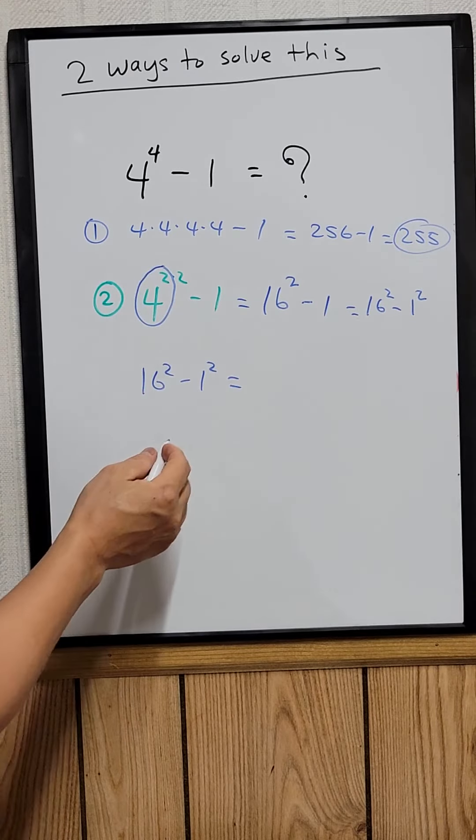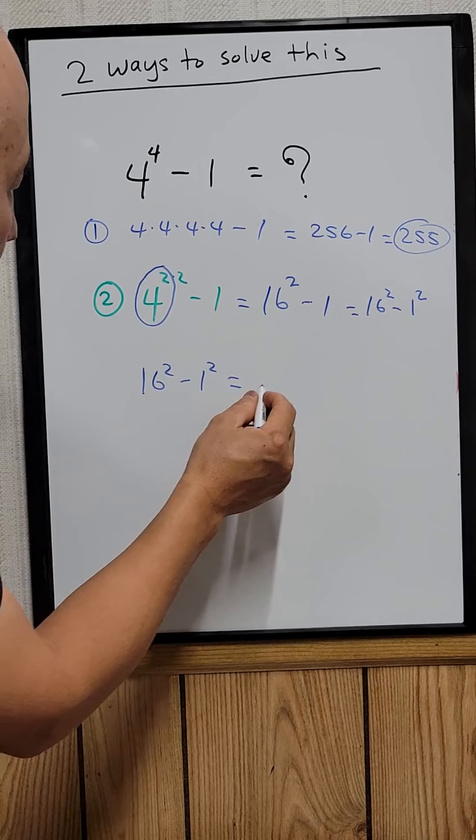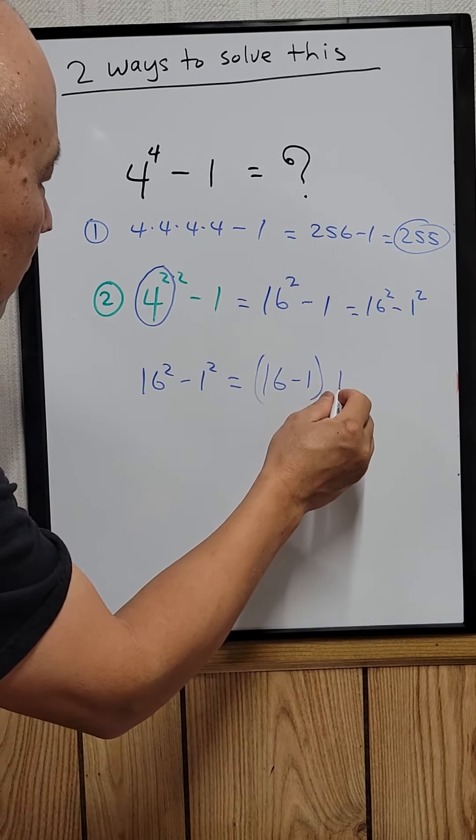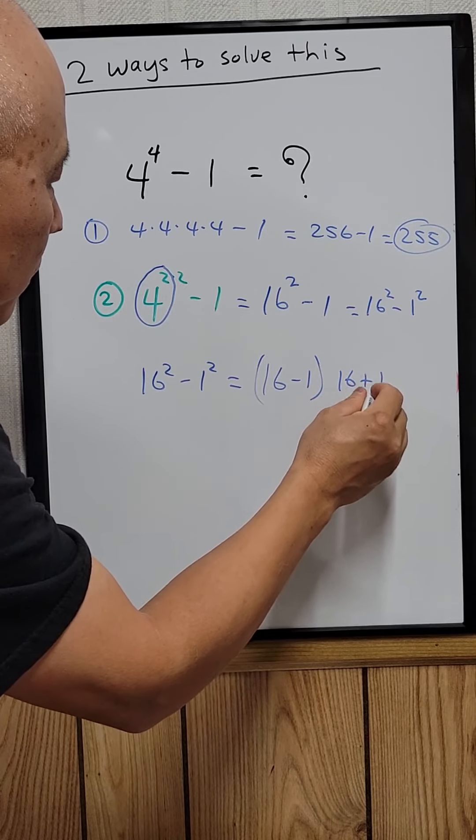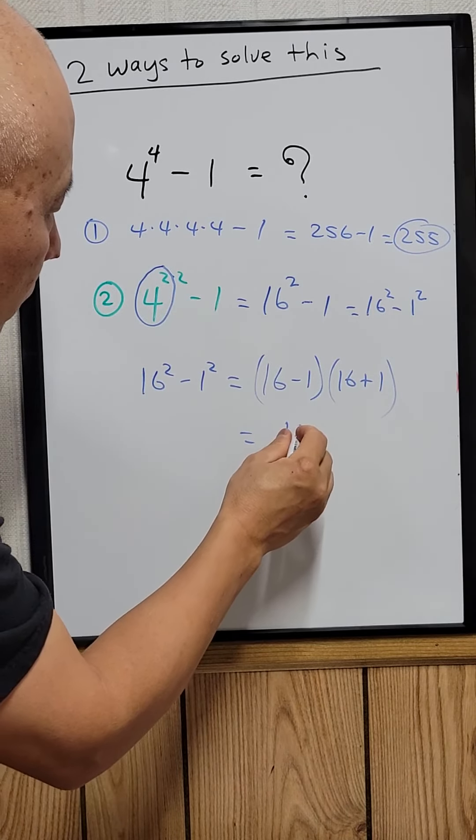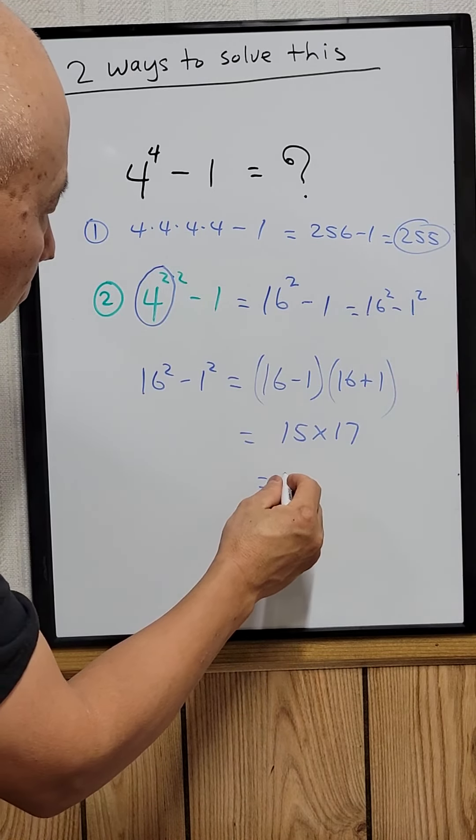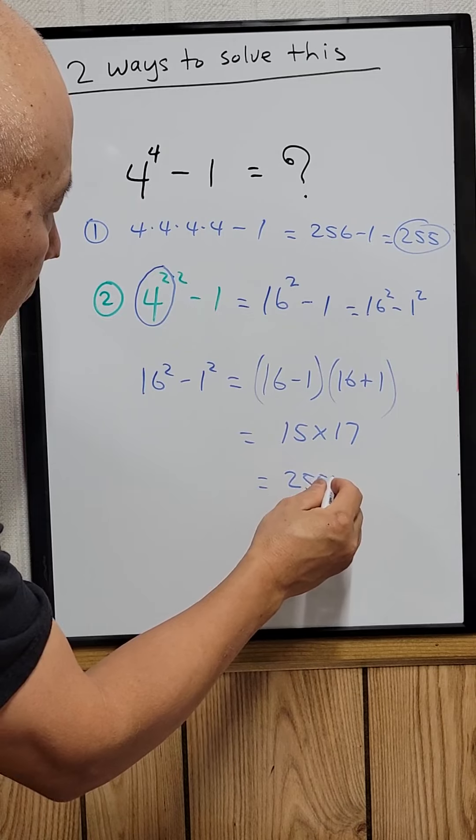So that's a perfect square. You can use the difference of squares for this. So this could be written as 16 minus 1 and then 16 plus 1. That would be 15 times 17. So the answer is 255.